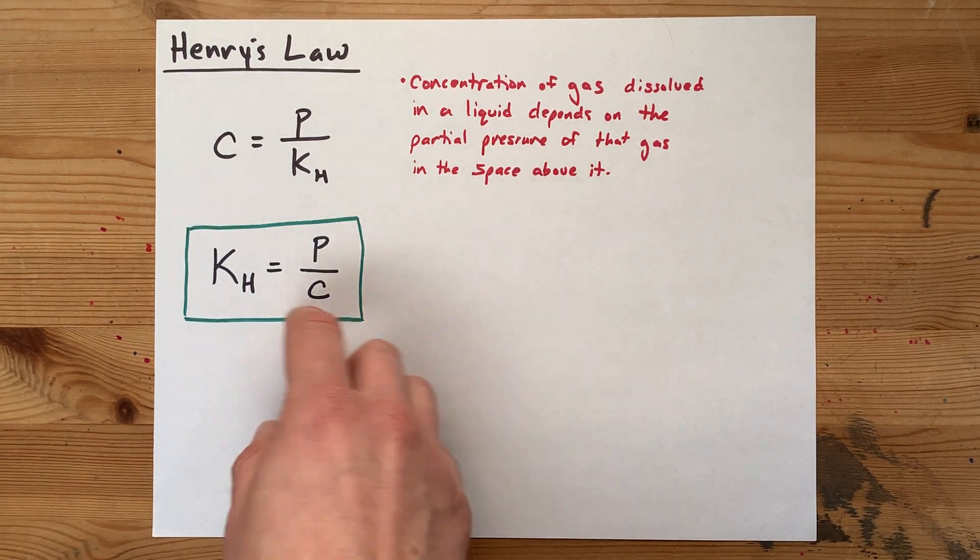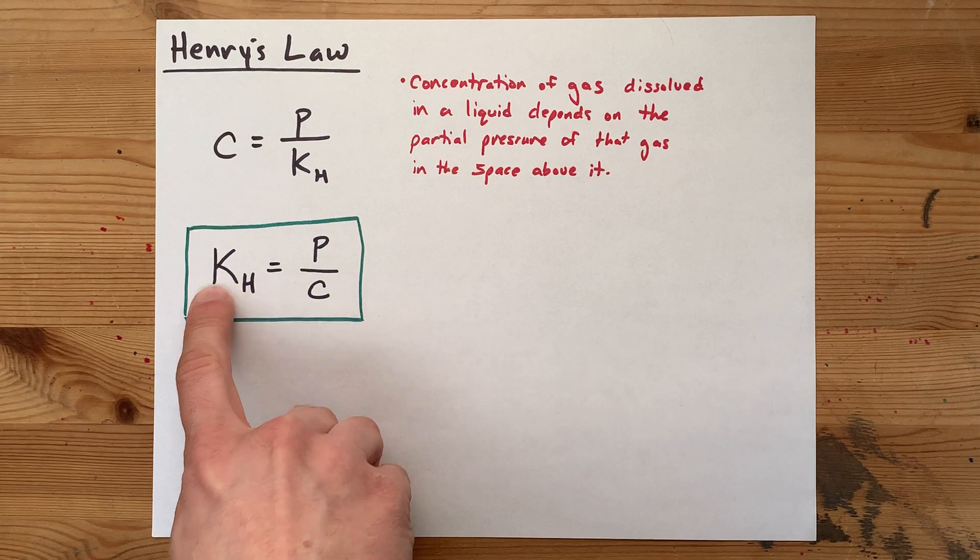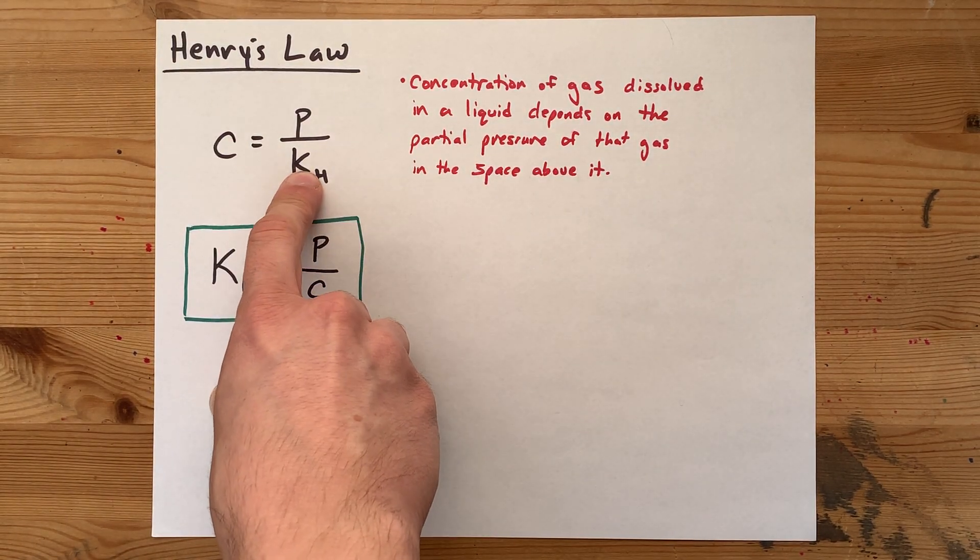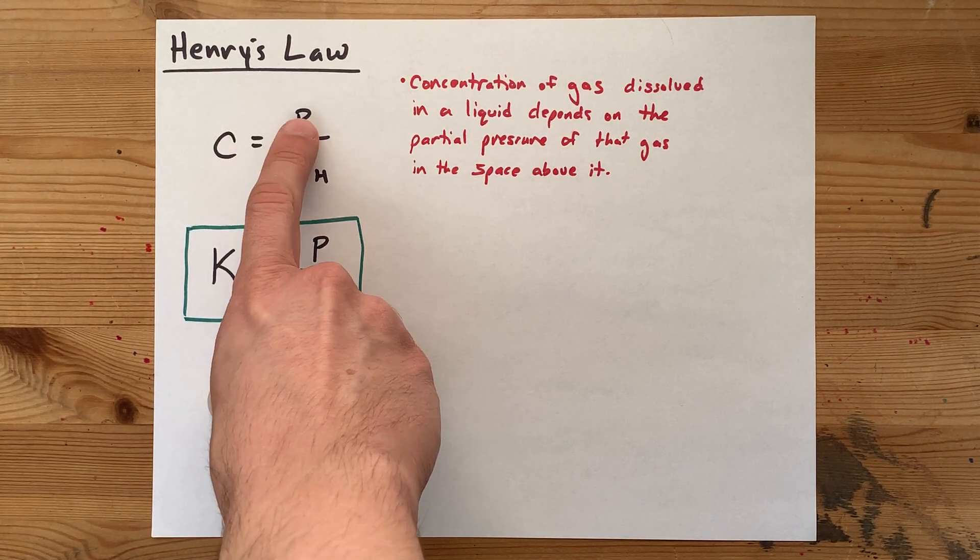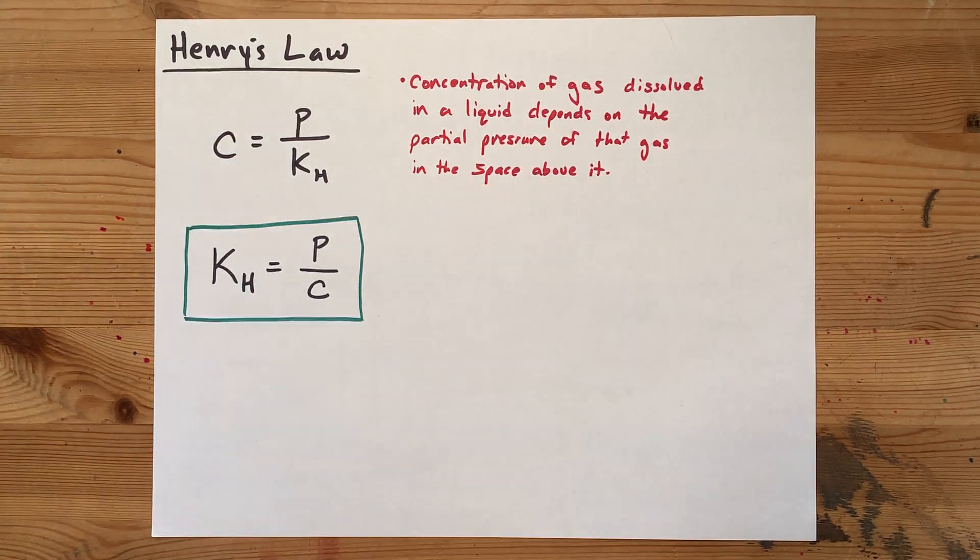Now the important thing to remember here is that you can rearrange this if you'd like. Multiply both sides by C, divide both sides by KH, you end up with something like this. So the concentration goes up when the pressure, the partial pressure of the gas, goes up above it.